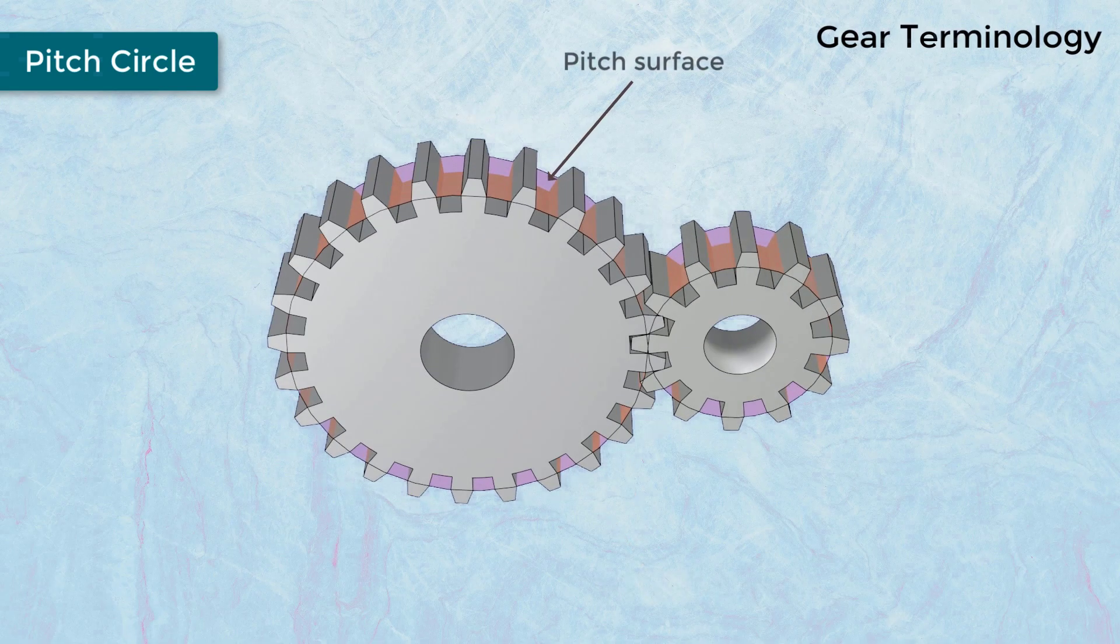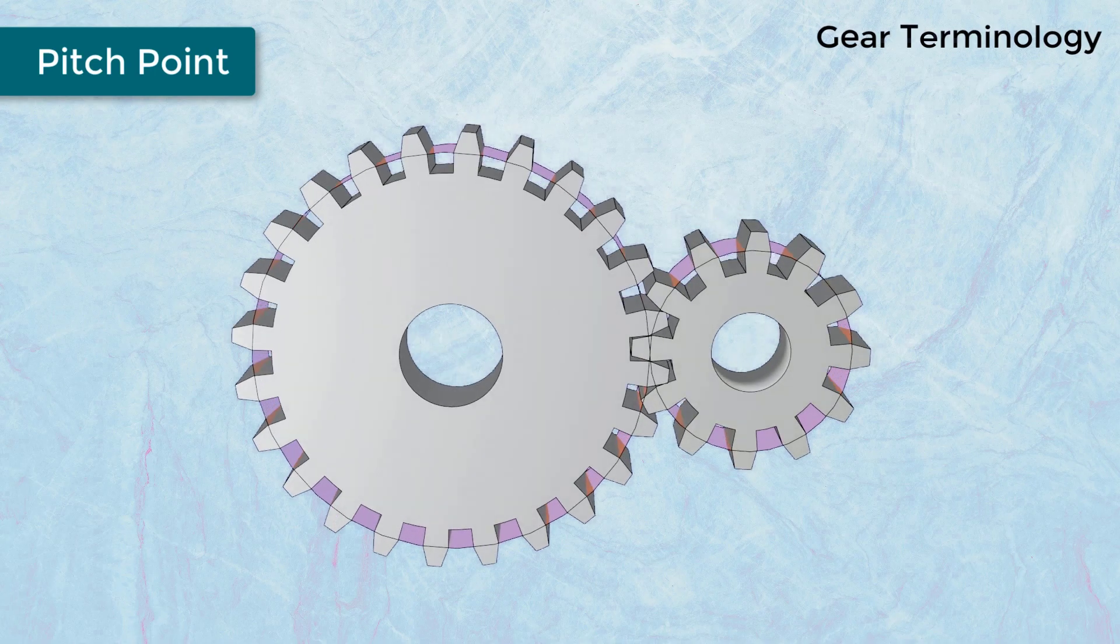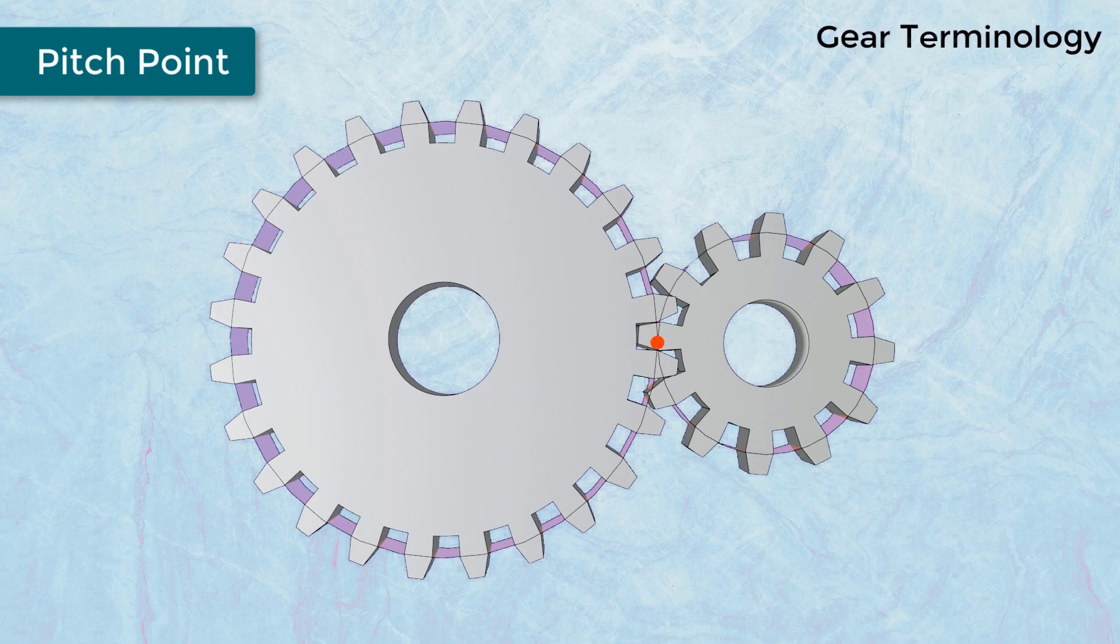This surface of the disc is called the pitch surface. Pitch Point: When two gears are in contact, the common point of both pitch circles of meshing gears is called the pitch point.